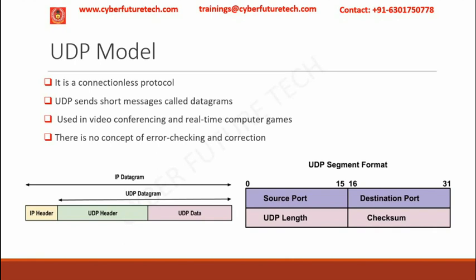The UDP datagram header has four fields of two bytes each. First, the source port, which is used to identify the source port number. Second, the destination port, used to identify the destination packet port. Third, the length, which is the length of the UDP datagram including the header and the data. Fourth, the checksum, computed as a 16-bit one's complement of the one's complement sum of a pseudo header of information from the IP header, UDP header, and data, padded with zero bytes at the end to make a multiple of two bytes.